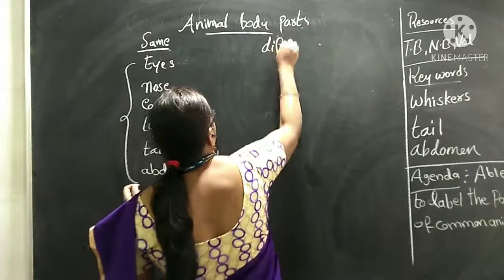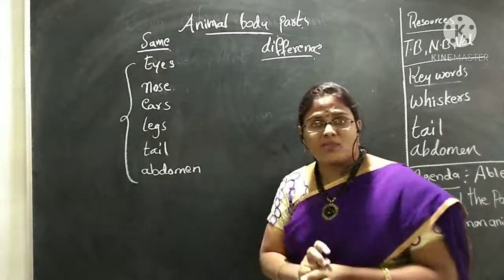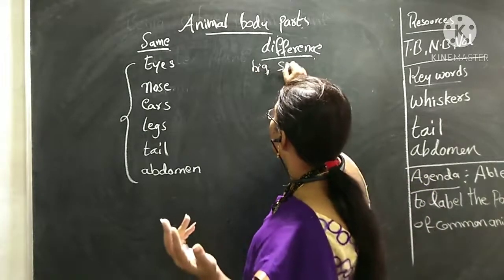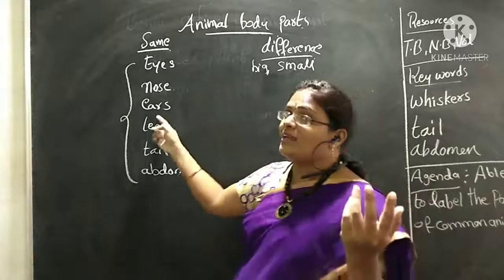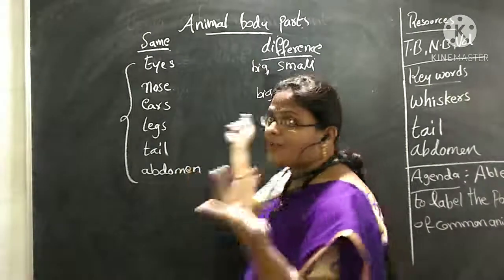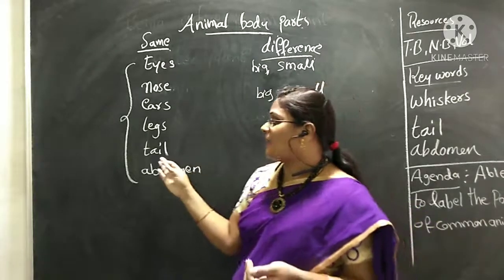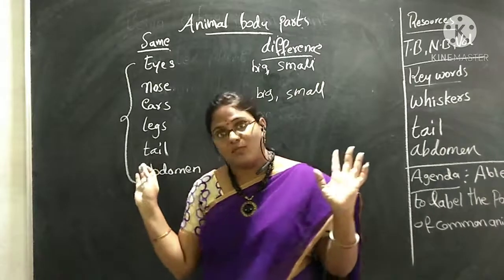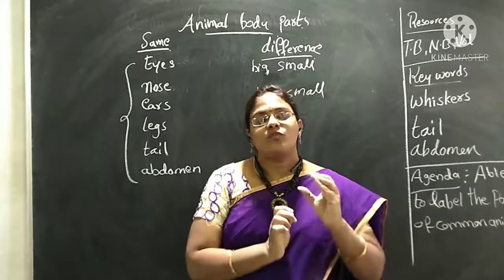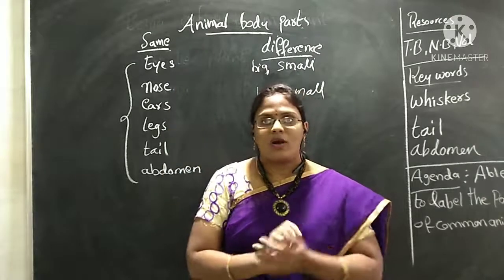Now tell me how they are different. Do all the animals have the same type of eyes? No. Some animals have big eyes, some have small. Same with ears — some animals have big, some have small. Their legs are also different in size, and color changes too. Some animals have small tails, some have big tails. Some animals have long necks, some have short necks.